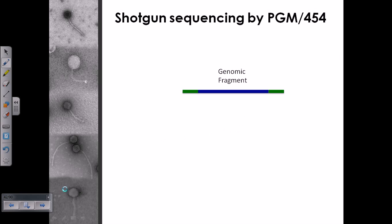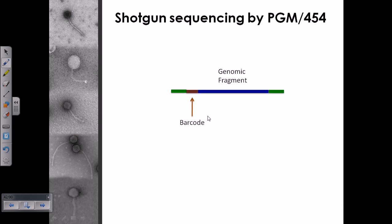In addition to the adapters, we also add a barcode. A barcode can be a fluorescently tagged molecule or one with a radioisotope, so we can track the presence of the genome during sequencing. It is very important to mark the genome with something detectable — in this case we typically use a fluorescent dye.